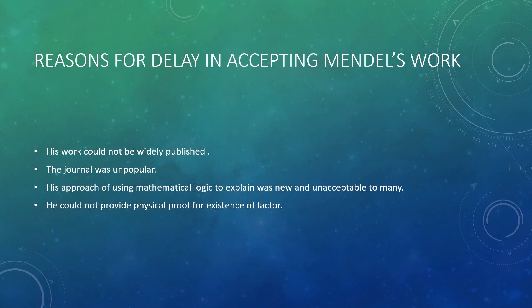Still, there were reasons why his work was ignored. First, his work could not be widely published, and the journal he used was unpopular at the time. His approach of using mathematical logic — that is, biostatistics — to explain probabilities was unacceptable to many contemporaries. And he was unable to provide physical proof for the existence of factors, because he did the study on the basis of observation alone.